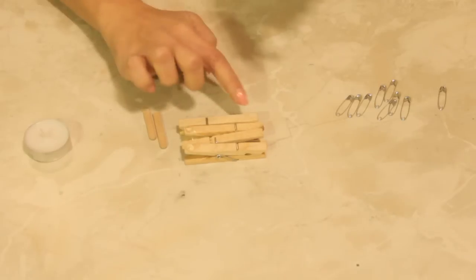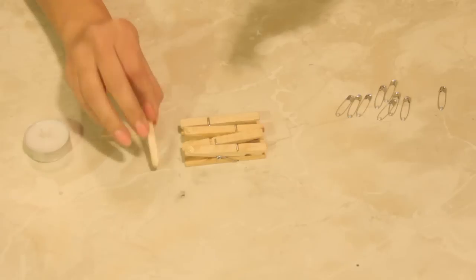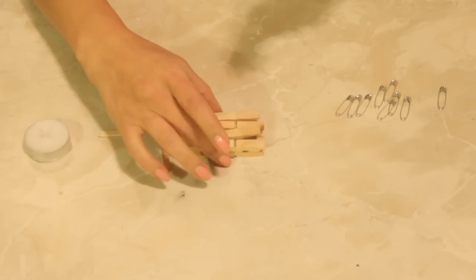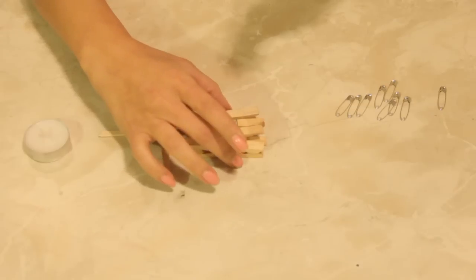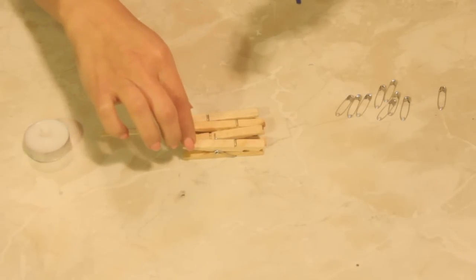Now as you can see, they're arranged wide end to narrow end because this is going to make a nice creative and sturdy platform for the candle to sit on.